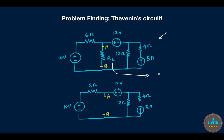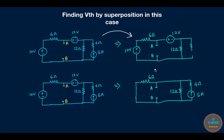The very first step in designing the Thevenin circuit is removing RL altogether, as you can see at the bottom. The first thing we need to find is Vth. Finding Vth involves superposition in some cases. In this particular example, superposition is the best way to find Vab or Vth, because we have both voltage sources and current sources. You can also apply KVL, KCL, and other circuit theorems, but superposition is preferable here.